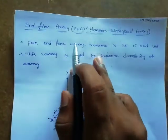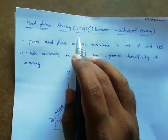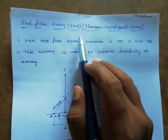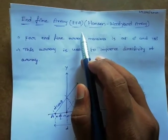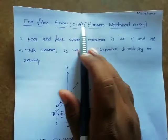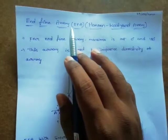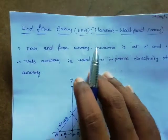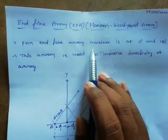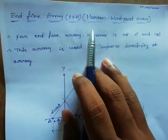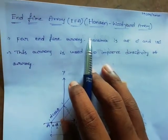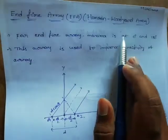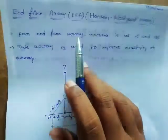The next topic is end fire array, also called the Hanson-Woodyard array, proposed by Hanson and Woodyard. In linear uniform arrays we already discussed broadside array; end fire array is the continuation of that. For end fire array, the maxima is at 0 and 180 degrees — this is the major difference from broadside array, where radiation pattern is along 90 and 270 degrees.